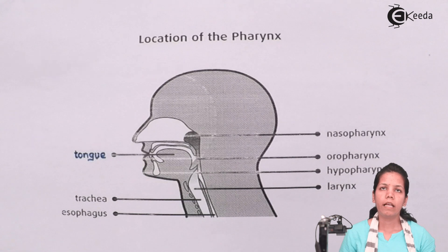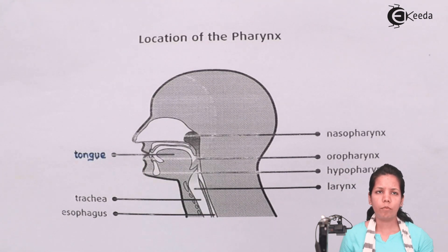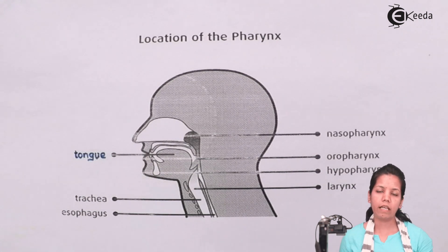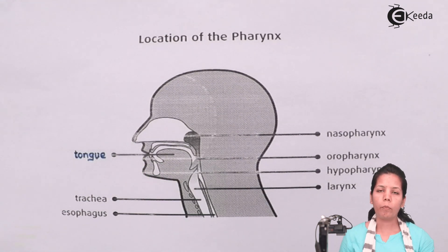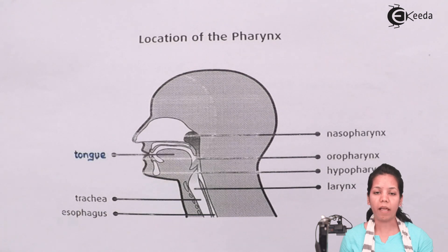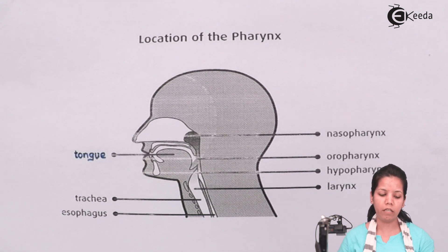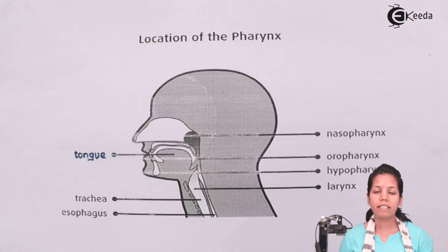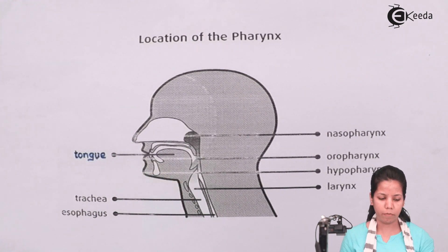There is also an organ termed as the epiglottis. The opening of the pharynx region into the larynx is called the epiglottis, and it is guarded by a soft, movable flap — that is the epiglottis or glottis region.